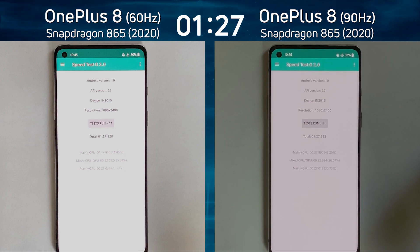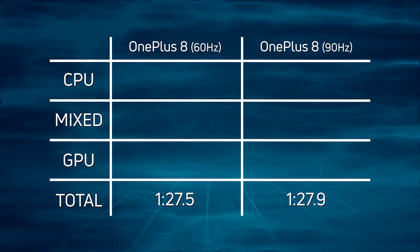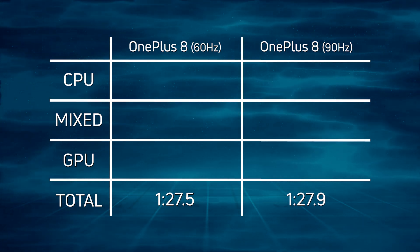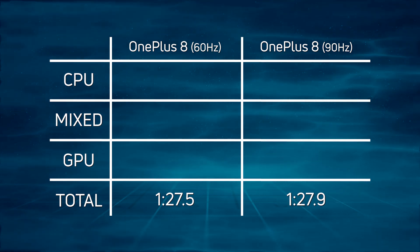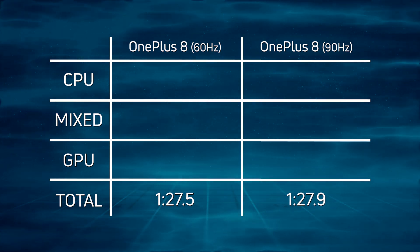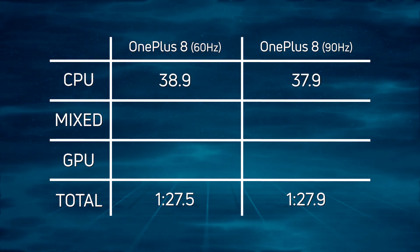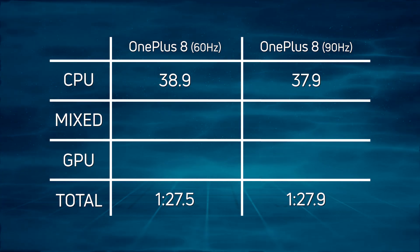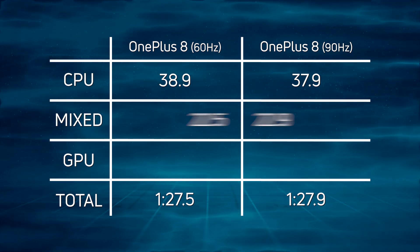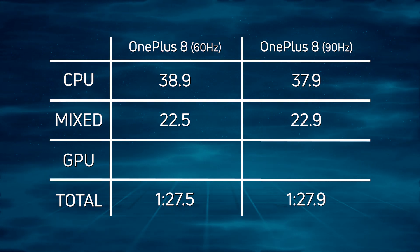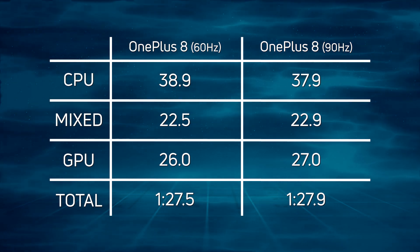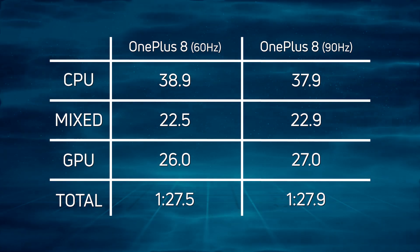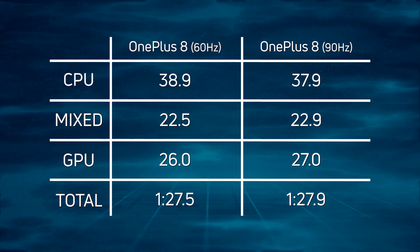Let's break down the scores and see exactly what happened. For all intents and purposes, the devices both finished at exactly the same time, as we would expect, because the refresh rate of the display makes no difference. The actual numbers were 127.5 versus 127.9, so in fact the 60Hz version was fractionally faster. CPU scores were 38.9 versus 37.9, so the 90Hz OnePlus 8 seemed to do slightly better in the CPU part, though it was hardly doing any display work. Mix CPU-GPU was 22.5 versus 22.9, and then 26 on the nose for the GPU at 60Hz versus 27 on the nose for 90Hz. Overall, not even half a second difference between them — it makes no difference at all to performance.